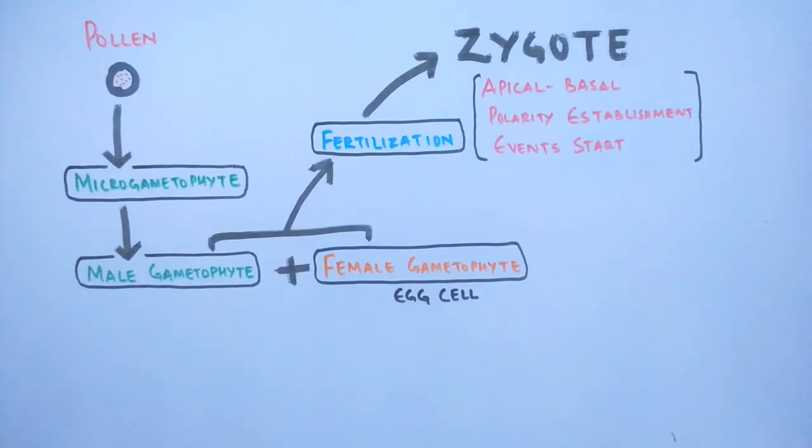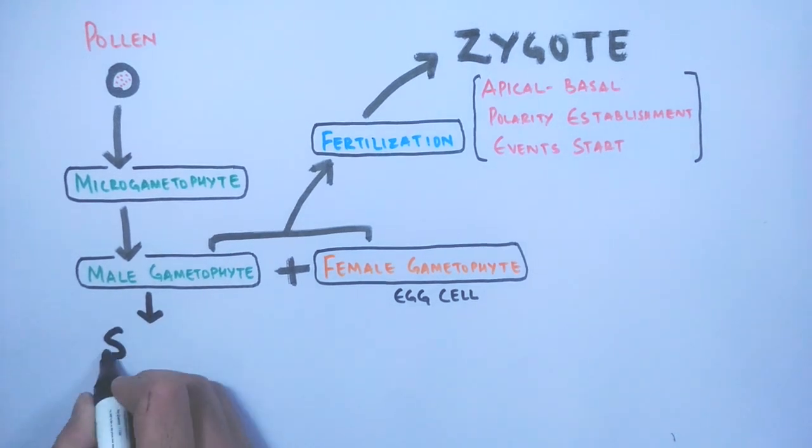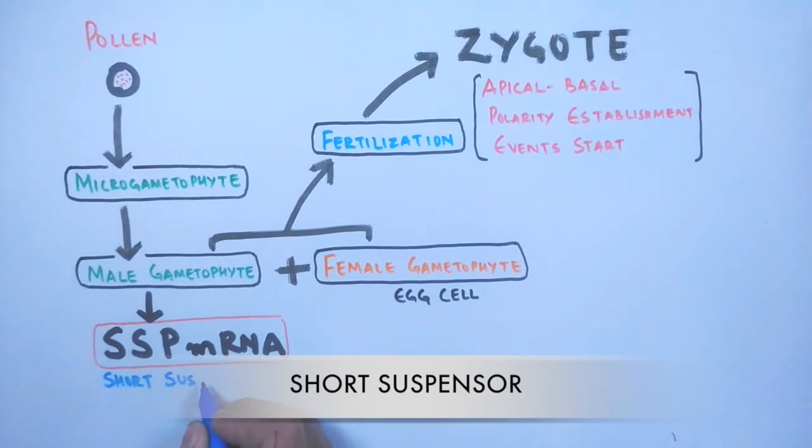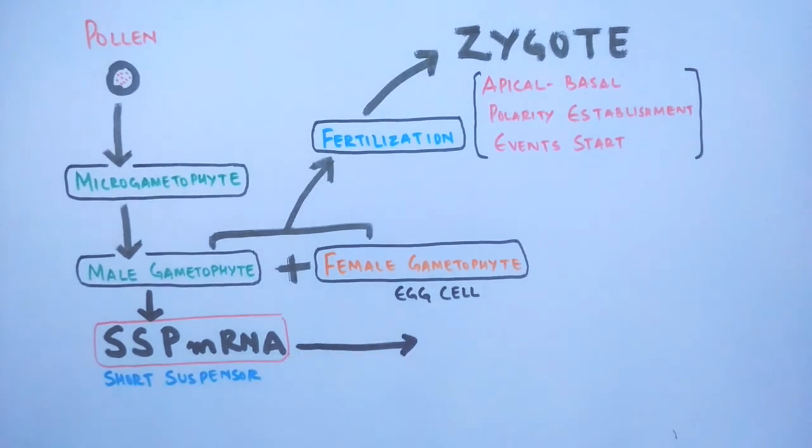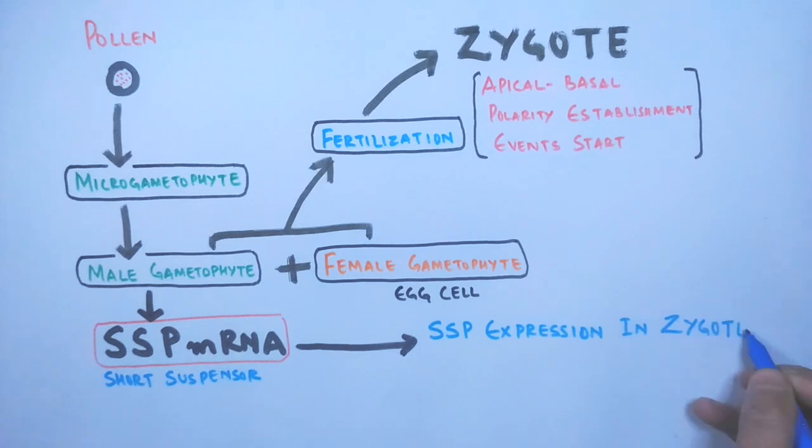Let's see what are the different proteins that initiate the apical-basal polarity. First, the male gametophyte has sspmRNA (short suspensor) that means it delivers sspmRNA to the zygote.